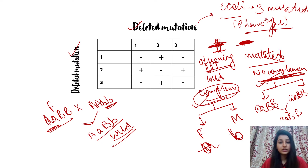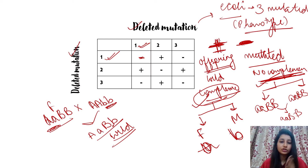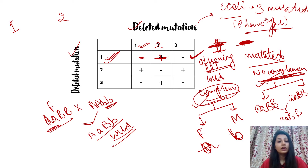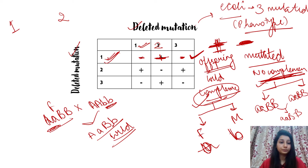Now let's read the table. When we crossed strain 1 with strain 1, a negative result occurred — no complementation — because the same gene is mutated. When we crossed strain 1 with strain 2, it is positive, meaning two different genes are mutated. When crossed with strain 3, it is also negative — no complementation. So we can say that strain 1 and strain 3 have the same gene mutated.